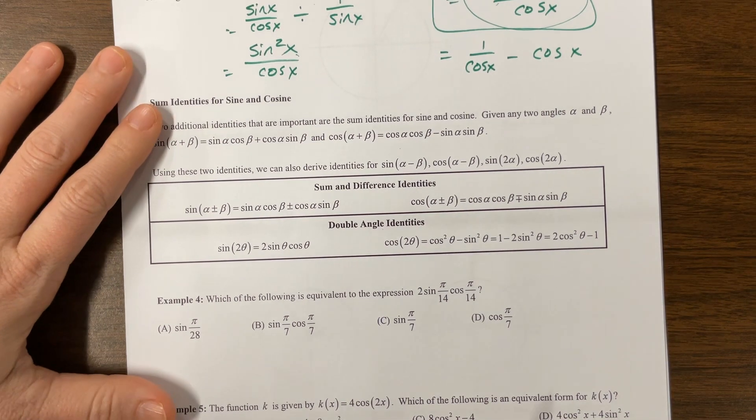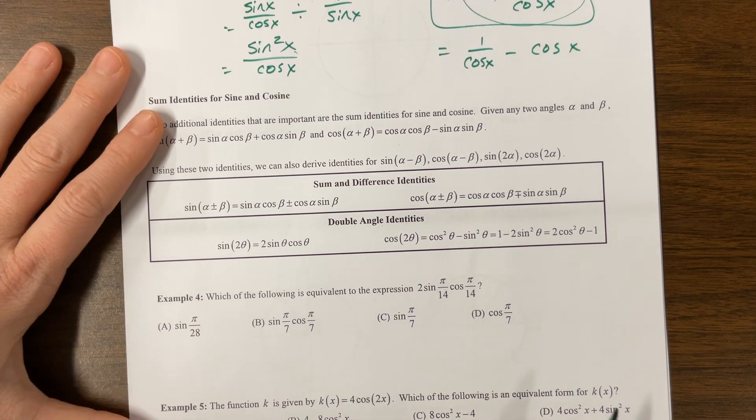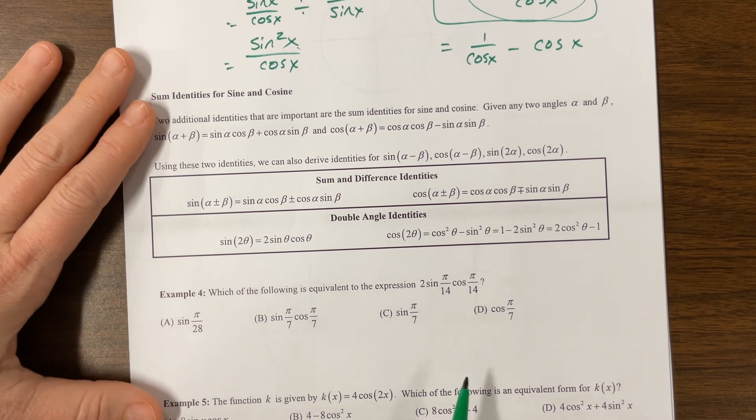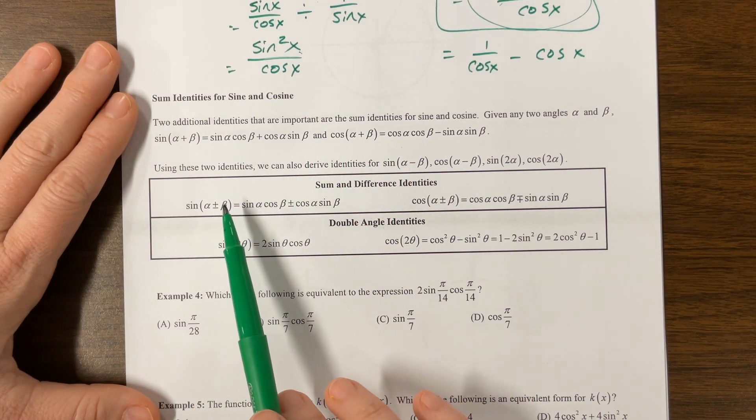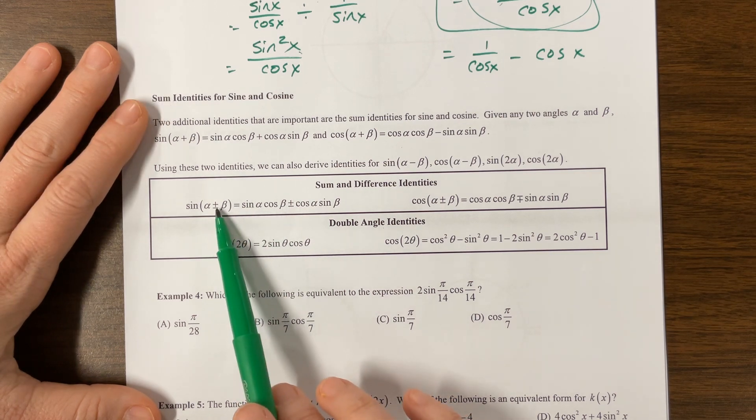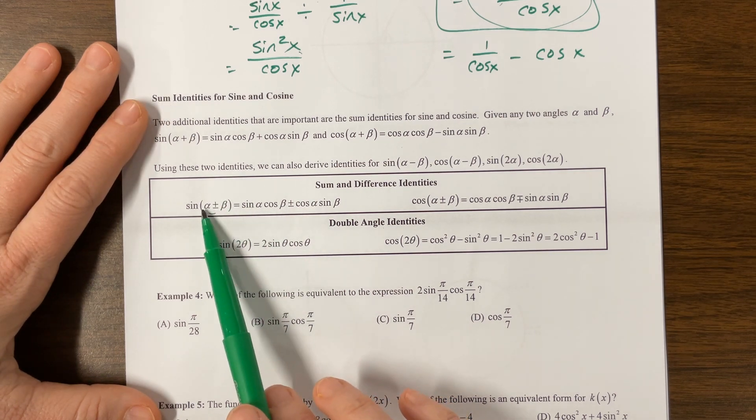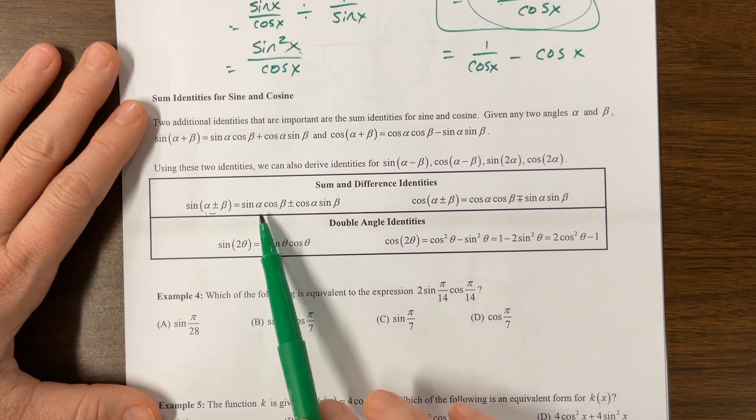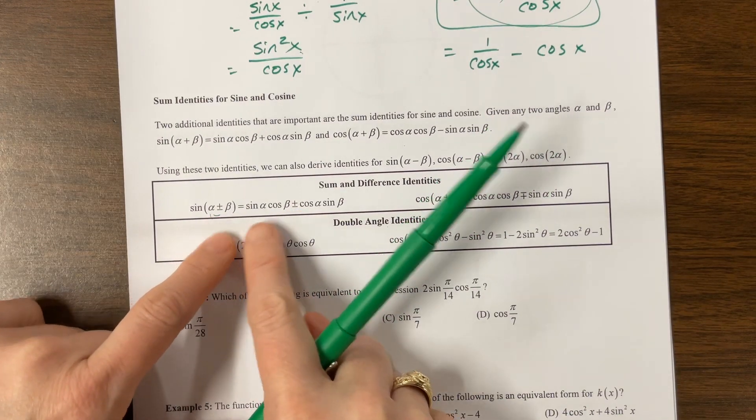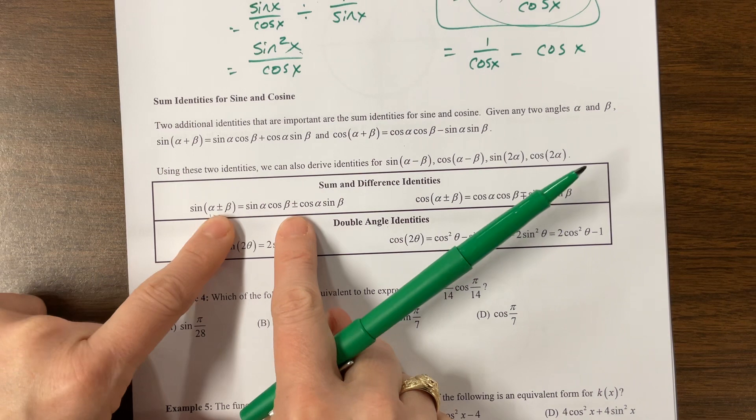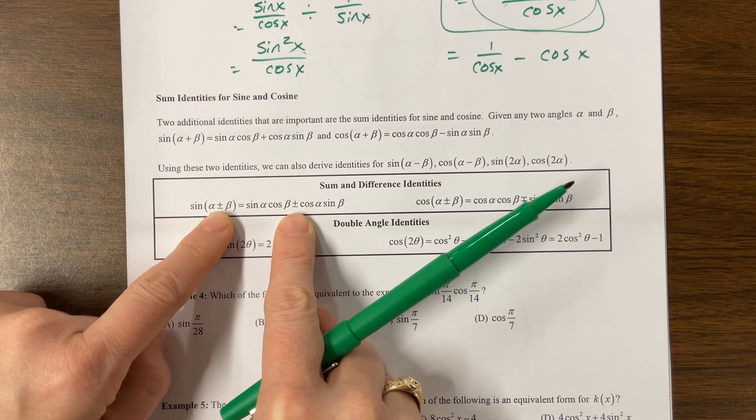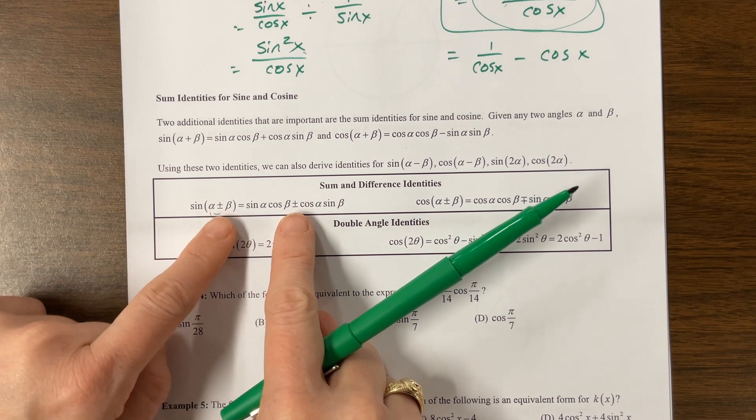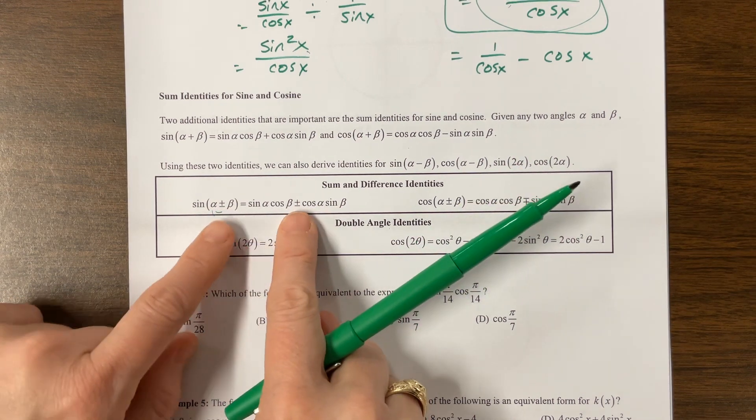Okay, and then we have more identities, the sum and the difference, and then the double angle identities. So let's see. Okay, on this one, this allows us to put two equations together, alpha plus beta or alpha minus beta. And so on this one, I like to remember sine, cosine, cosine, sine, and the same SIGN. And I always spell that out because there's SINE, s-i-n-e, and SIGN, s-i-g-n. So it's sine, cosine, cosine, sine with the same SIGN.